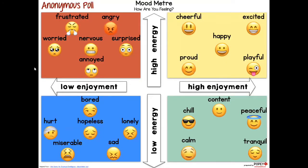We want to start by having you do this mood meter and check in with how you're feeling today. If you've been in one of our workshops before, you've probably seen this. We adapted it from the Yale Center for Emotional Intelligence — the adult version has around 400 emotion words across four quadrants: red, blue, green, and yellow. We made a primary version with just a few words and some emoji faces. The axes show low to high enjoyment and low to high energy.